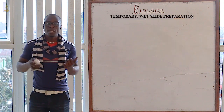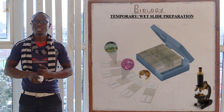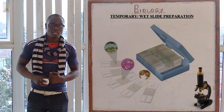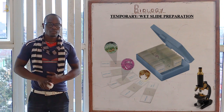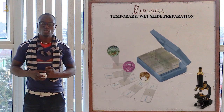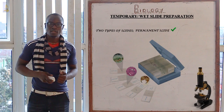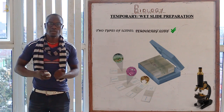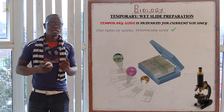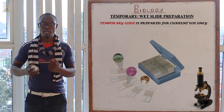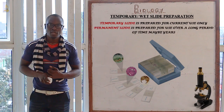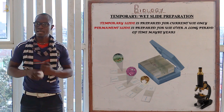Let's look at temporary preparation of slides. In the temporary preparation of slides, we have two different types: a permanent slide and a temporary slide. A temporary slide is mainly prepared for current use, while a permanent slide will be prepared for use over and over again in long periods of experiment cycles.